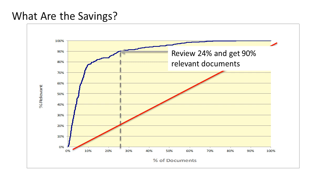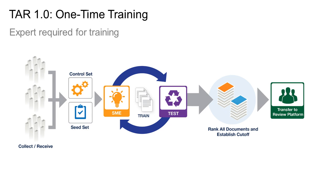From there, it's very easy to understand the savings. It is the volume to the right of this line times whatever you think the review cost is or whatever your experience is. And so that's the revolution of TAR, and it's not an abstract promise by hucksters, because you control the sampling and the measurements, and the tagging is done by your team, not by anybody else. We've talked a lot about TAR 1 and 2, and that's our focus today.